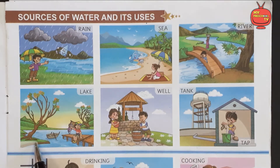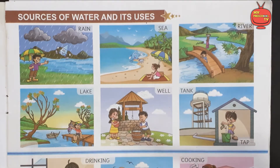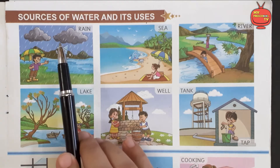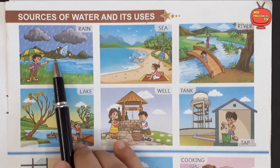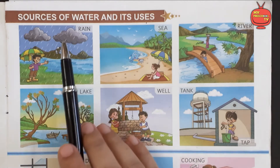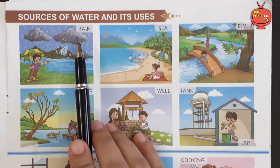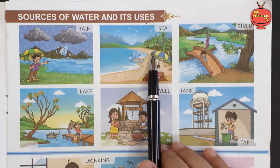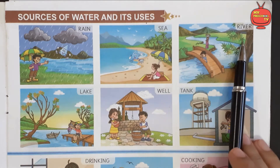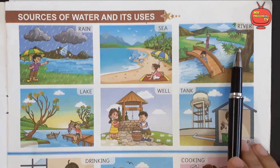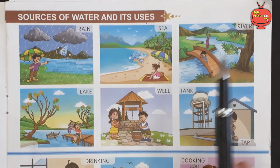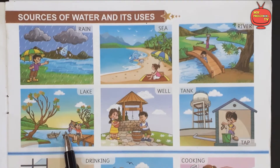So what are the sources of water? From where do we get water? The first one is rain. Rain is the most important source of water. We get water mainly from rain. Sea is another source of water. River is also a source of water. We also get water from the river.